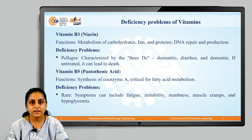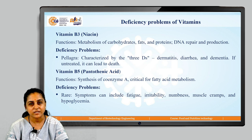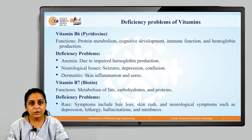Vitamin B5, also known as pantothenic acid, is the next vitamin. The deficiency problems associated with pantothenic acid are rare, and symptoms would include fatigue, sluggishness, irritability, numbness, and muscle cramps.